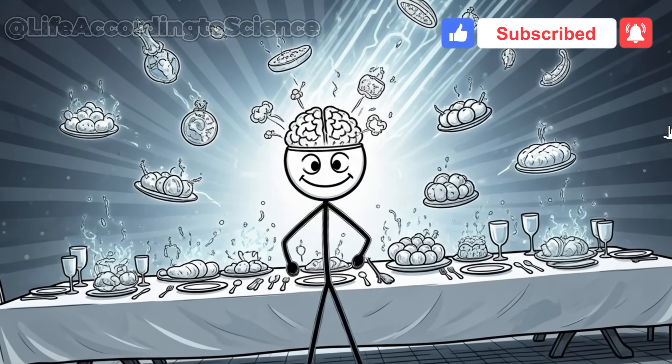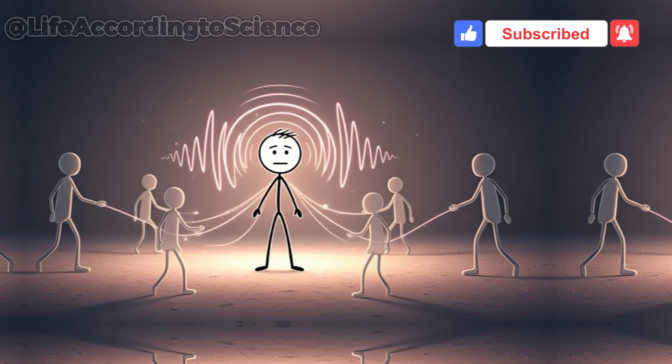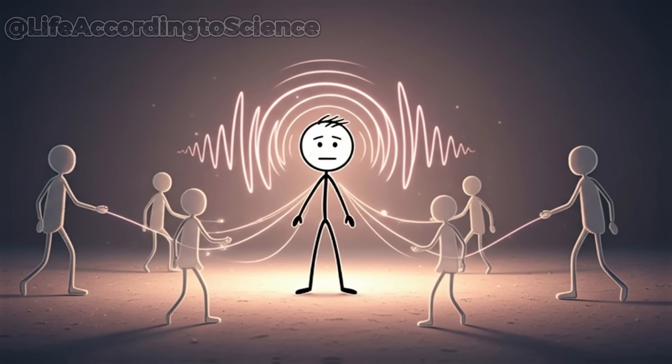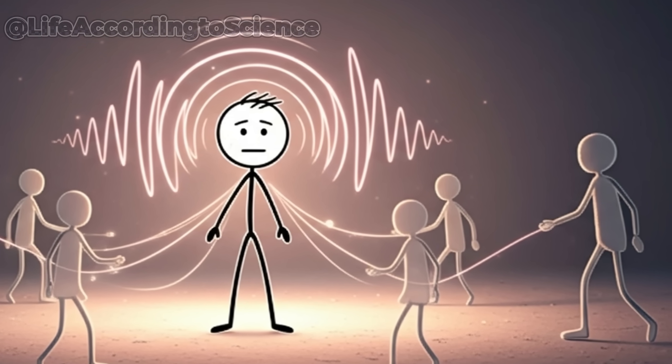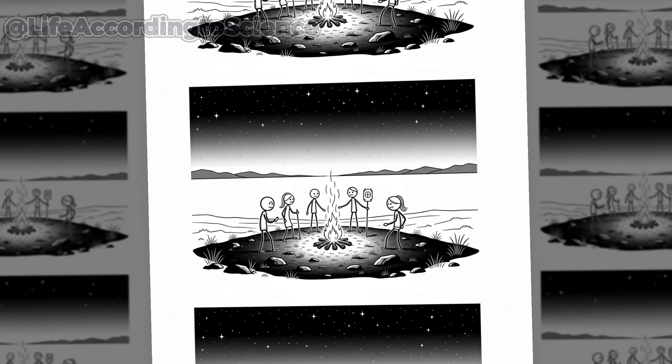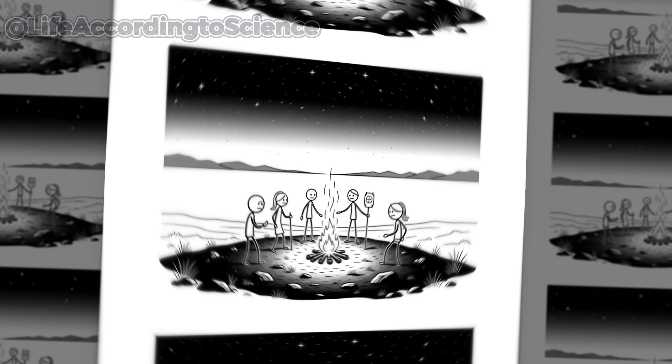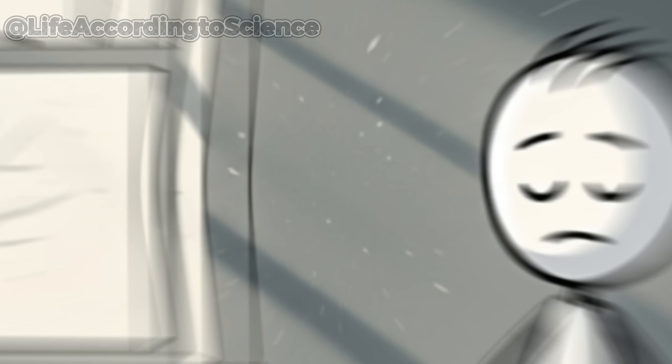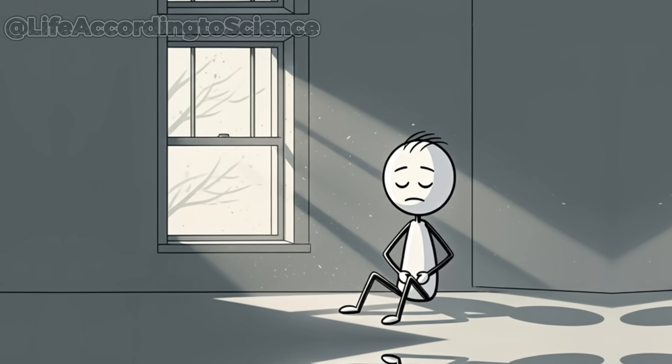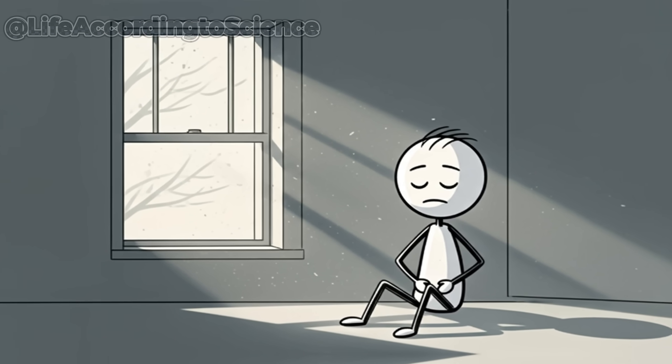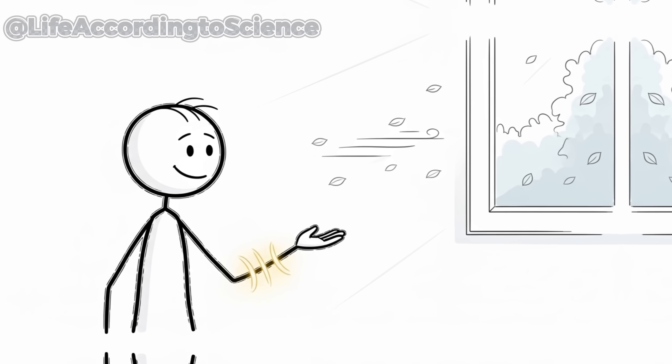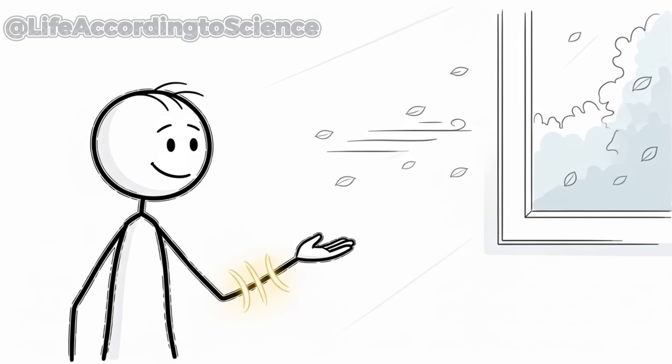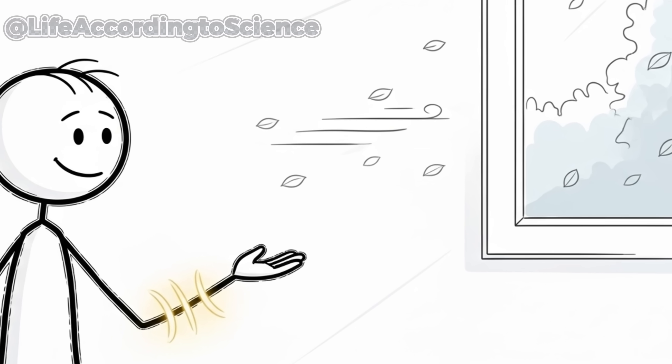Something curious happens around the 20th hour. Instead of feeling isolated, you may feel more connected. Your brain releases oxytocin, the same hormone tied to bonding and empathy. It's nature's way of encouraging cooperation and community during scarcity. After all, survival has always been a collective effort. As hunger persists, introspection deepens. The noise of constant consumption fades, replaced by a strange calm. You start noticing sensations, thoughts, even emotions you often ignore. That's your body realigning with its natural rhythm.